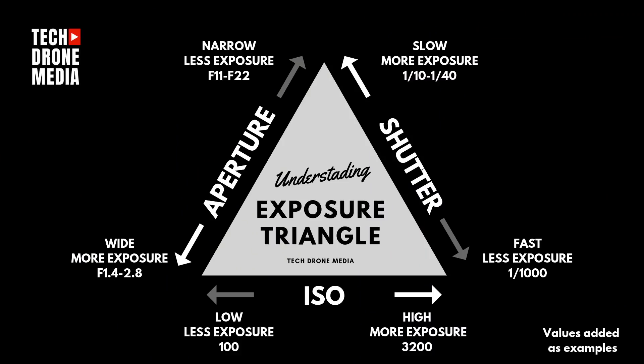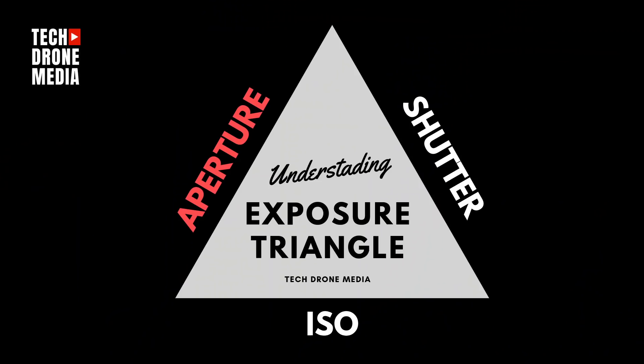The exposure triangle is a very common way within photography to describe the relationship between the three parameters. The triangle does not only apply to photography — it also works with video, even though it's used in a slightly different way. But the principles are the same.